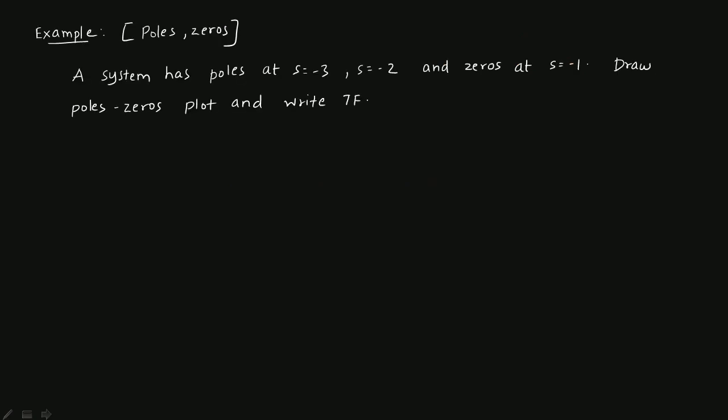Here is another example. A system has poles at s = -3 and s = -2, and a zero at s = -1. We need to draw the pole-zero plot and write the transfer function. The x-axis is the real part and the y-axis is the imaginary part. The zero at -1 is marked with a circle, pole 1 at -2 and pole 2 at -3 are marked with crosses. That is the pole-zero plot.